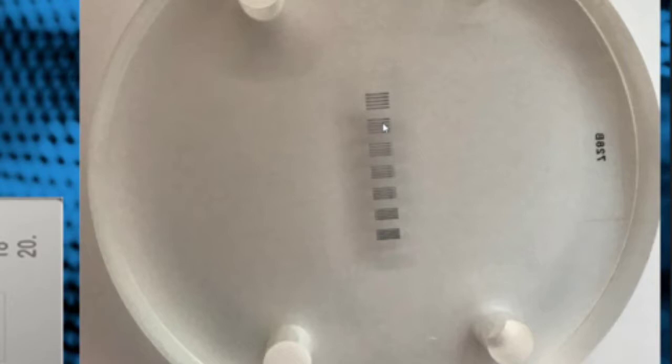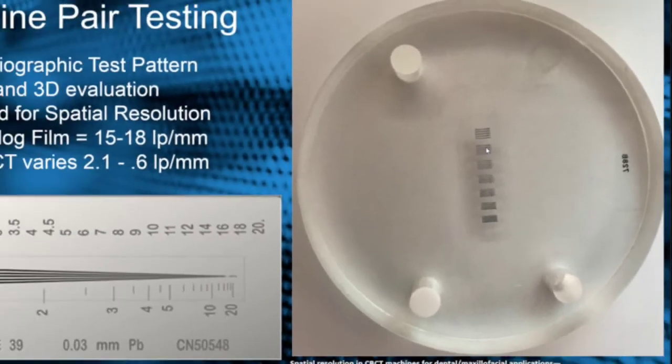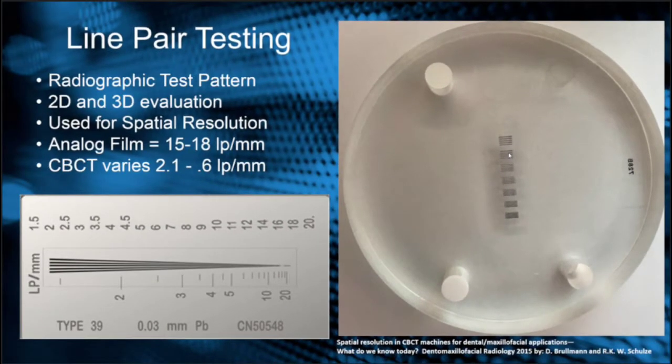X-ray it inside your cone beam and then see what you get. That will help you set the idea of how many lines that you might be able to see in your given machine.